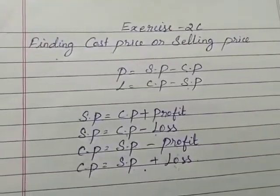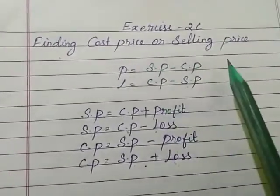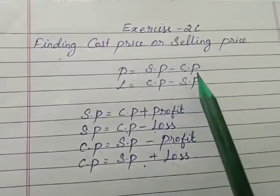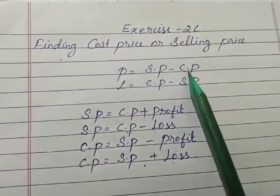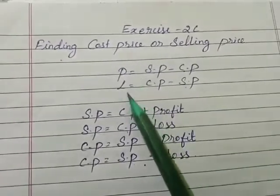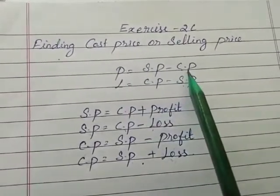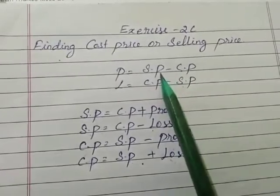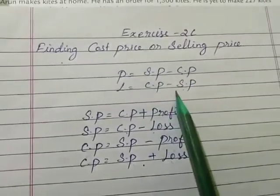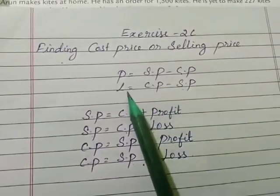Good morning students, today we are going to learn finding cost price or selling price in exercise 2C. You already know these two formulas: profit and loss. How do you find profit? If you subtract cost price from selling price, you will get profit. If you subtract selling price from cost price, you will get loss.